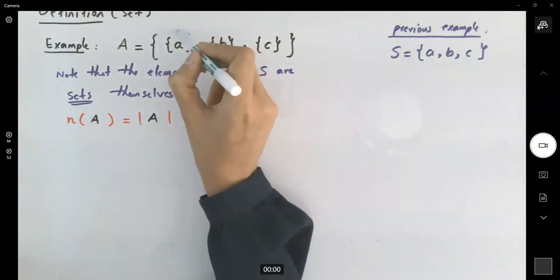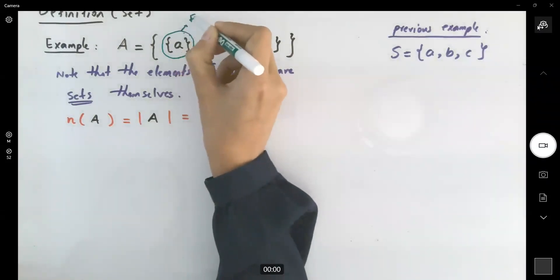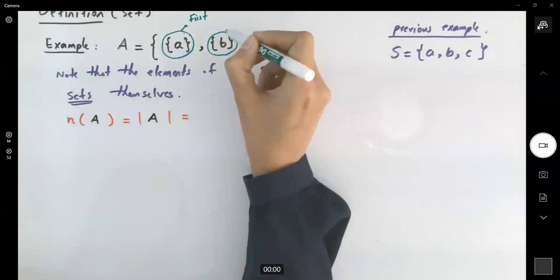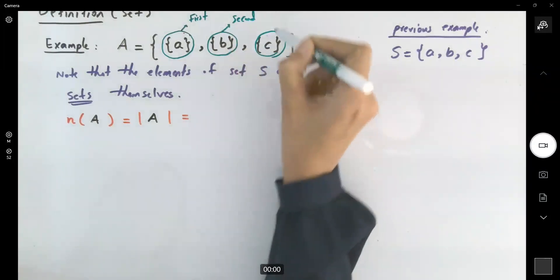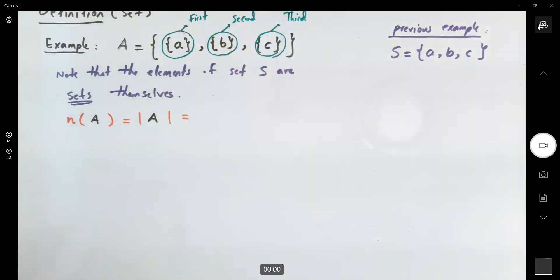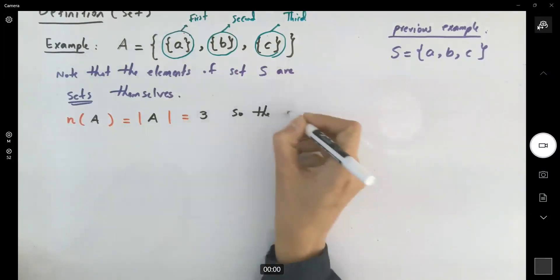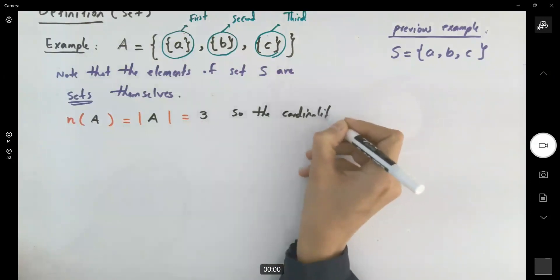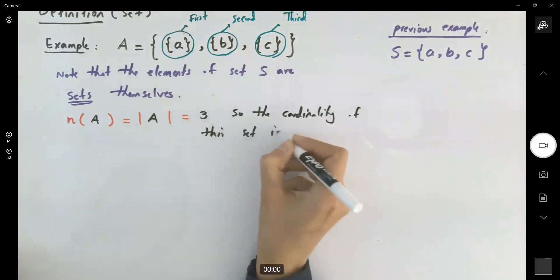The very first member is this set. This is the first member. The second member. And the third member. Isn't that complicated? The size of this set is three. So the cardinality is three. It has three members.